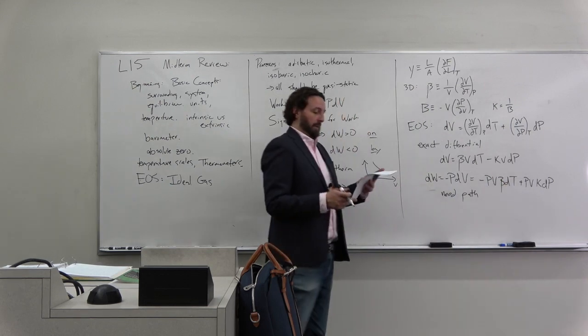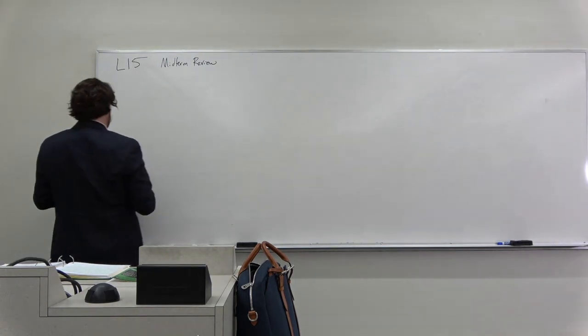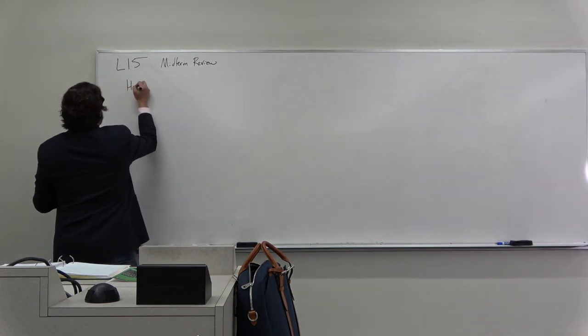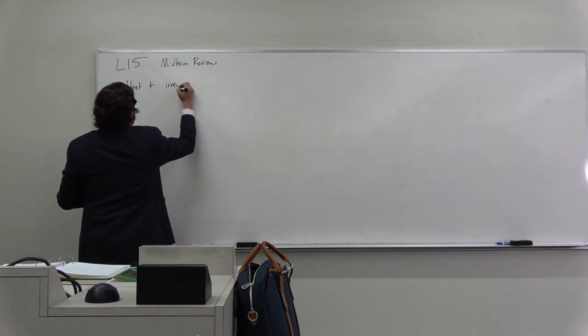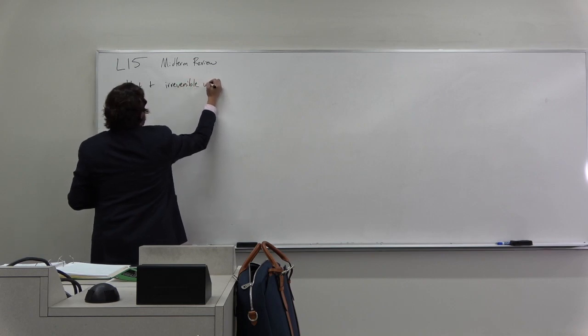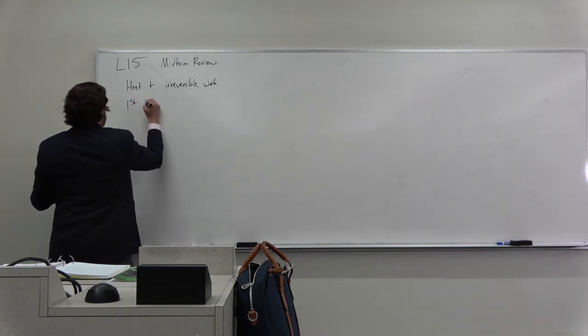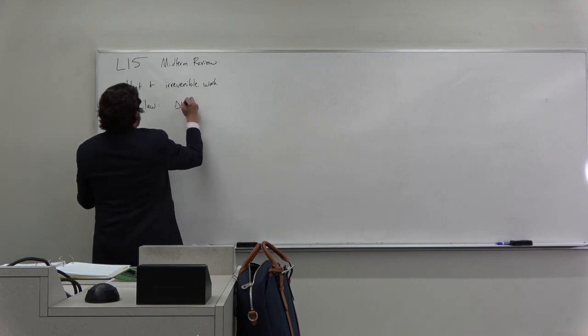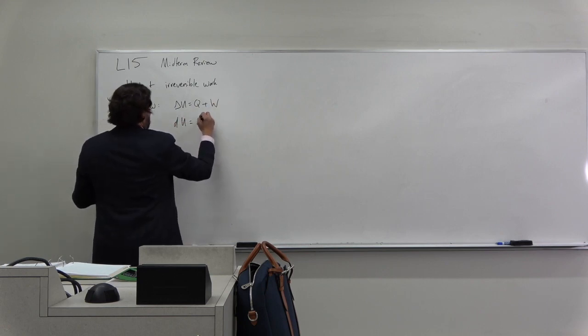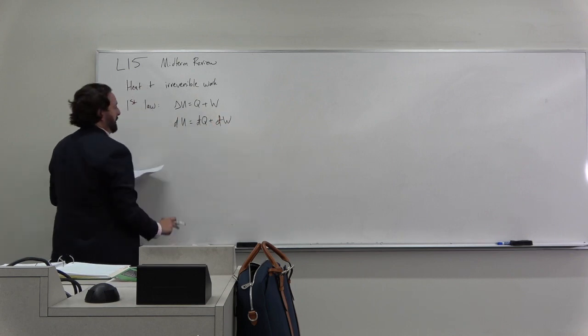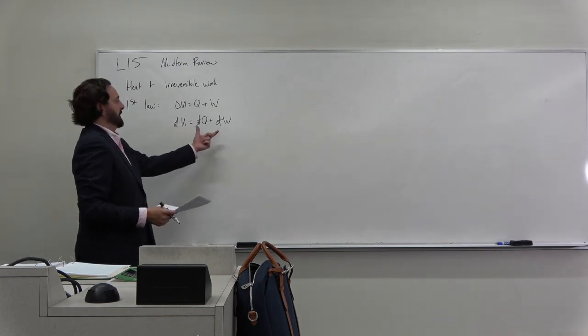After talking about equation of state for three-dimensional solid, we went on to heat and irreversible work, or dissipative work. We got our first law, which was delta u equals q plus w, or more often we wrote du is dq plus dw. The point was that u was a function of state, but q and w were not. This was an exact differential, and those were inexact.